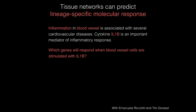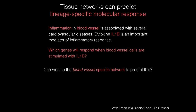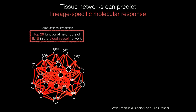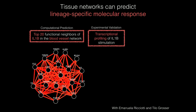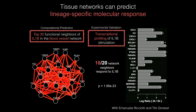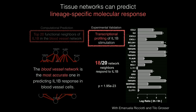We can use these networks to predict lineage-specific molecular responses. For example, for inflammation in blood vessels — critical for cardiovascular disease — we look at cytokine IL-1 beta, an important mediator of inflammatory response, and use our networks to predict which proteins will be perturbed by IL-1 beta induction. Transcriptional profiling confirms that 18 out of 20 predicted proteins are significantly changing at the transcriptional level upon activation; the other two are non-transcriptionally regulated but are indeed IL-1 beta interactors. The blood vessel network is by far the most accurate for predicting this response.